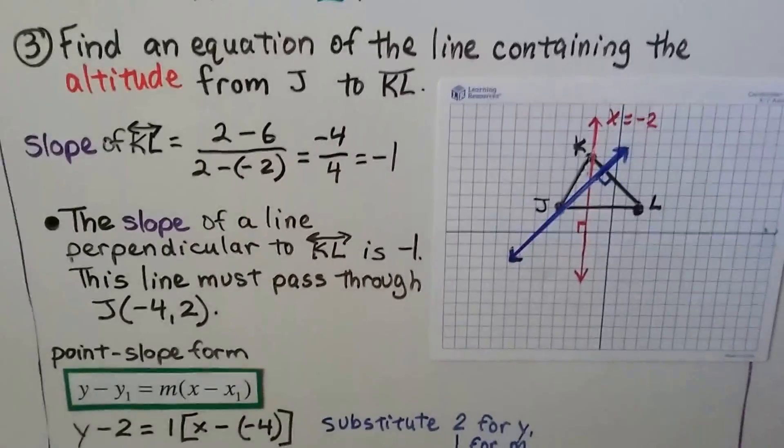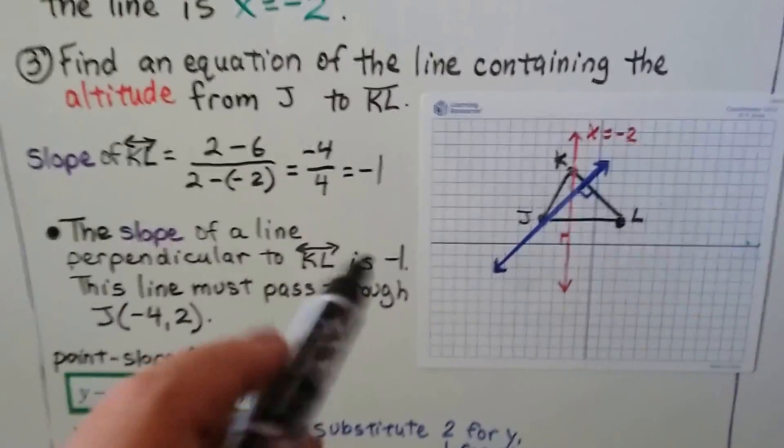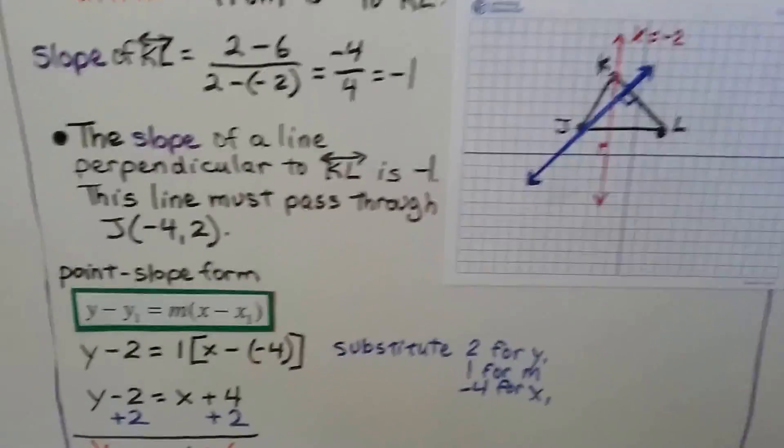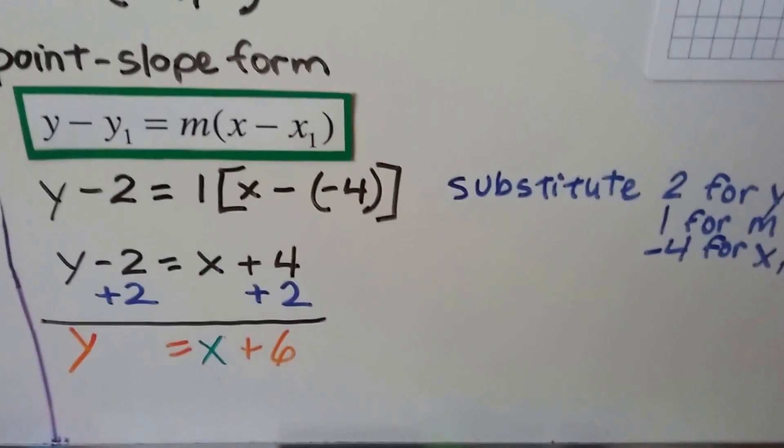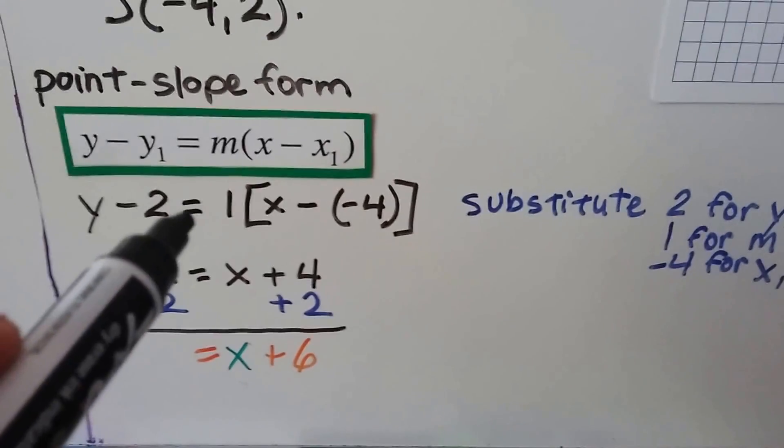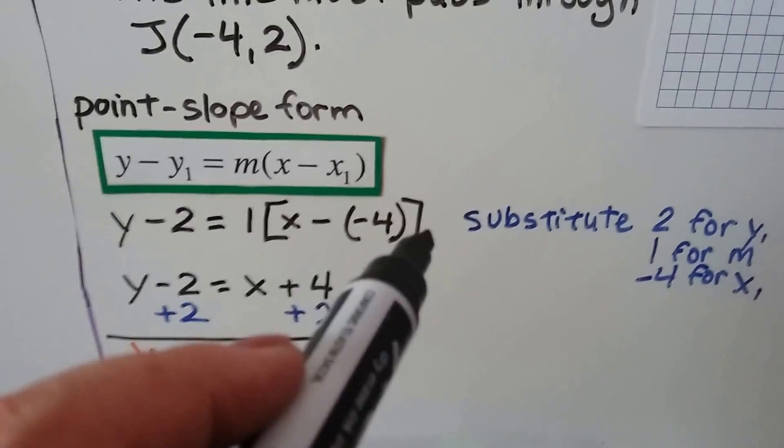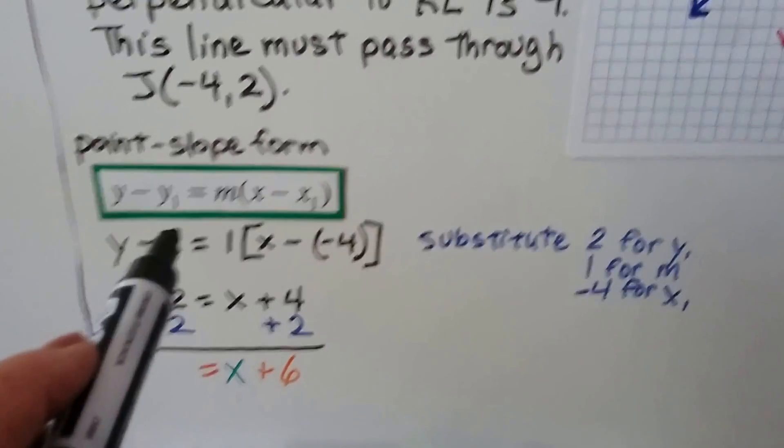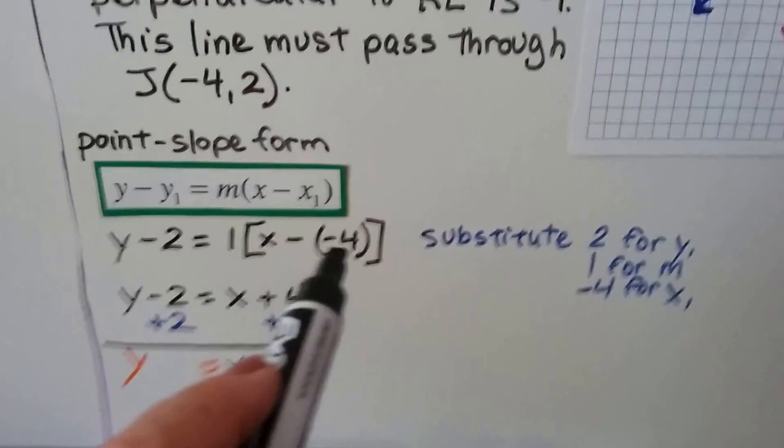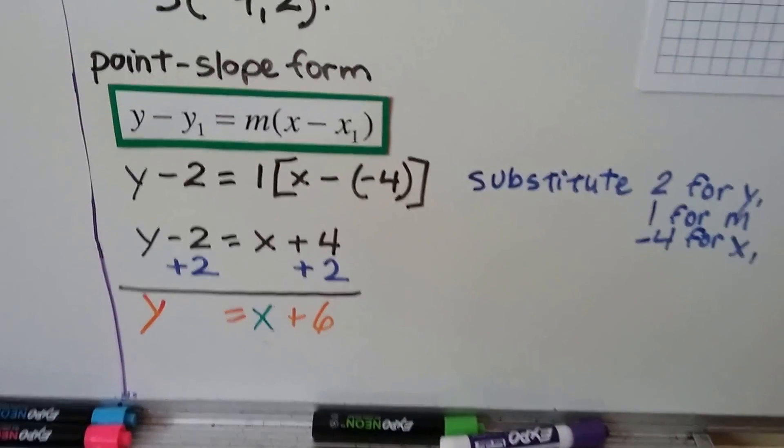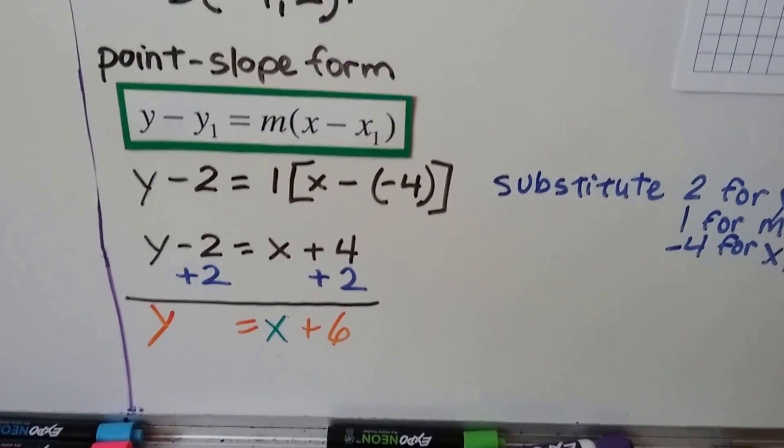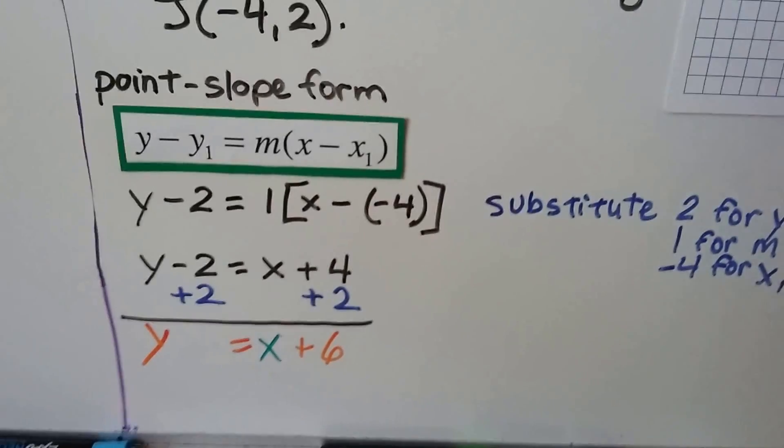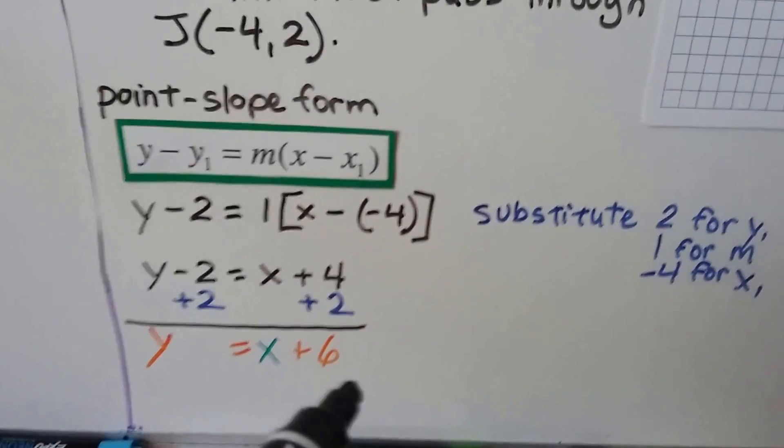And the slope of a line perpendicular to KL is a negative 1. That's the slope. And the line must pass through J at negative 4, 2. Using the point slope form, we have y minus 2 equals 1 times x minus a negative 4. When we use substitution, we put in a 2 for y sub 1, right here. We use a 1 for our slope m, and we use a negative 4 for x sub 1. That gives us y minus 2 equals x plus 4. And we can solve it for y by adding a 2 to both sides of the equation that eliminates this as a zero pair. And we have y equals x plus 6.